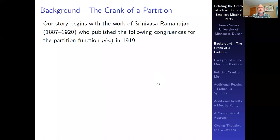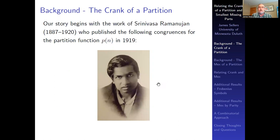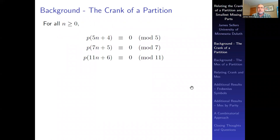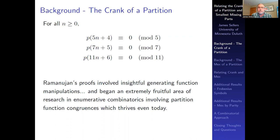A little bit of background: we begin in 1919 with a paper of Srinivasa Ramanujan on congruences satisfied by the partition function p(n). Ramanujan proved three congruences mod 5, 7, and 11 for the unrestricted partition function p(n), published a year before his death. His proofs involve insightful generating function manipulations, and that paper has led to a lot of work over the last century in enumerative combinatorics on congruences.